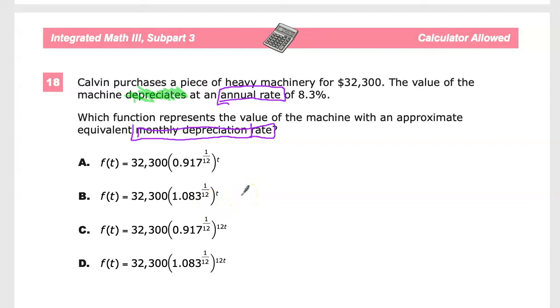Number one, the fact that it depreciates means that it's going to go down in value as opposed to up. The other thing you have to look at is the fact that there is an annual rate that they're giving you, that 8.3% is each year, that 8.3% should be spread out over the whole year.